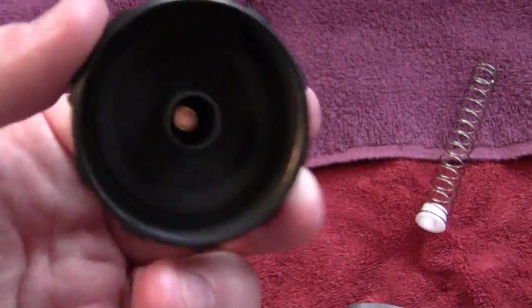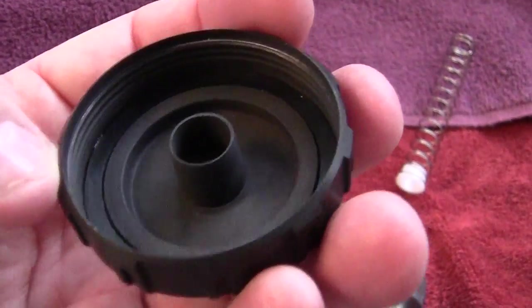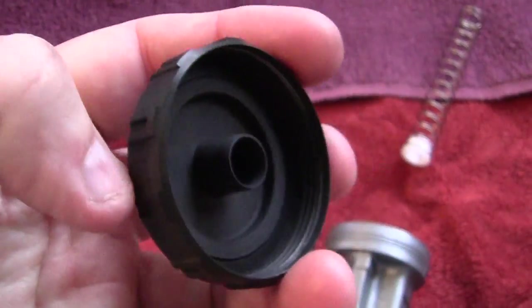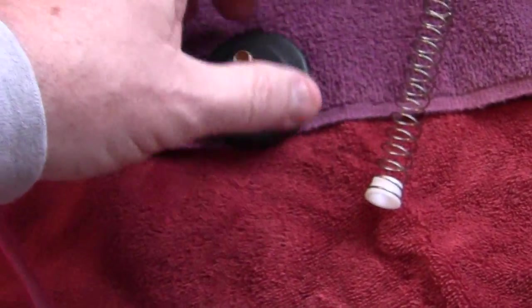The Keihin 33mm top is not plastic, it is aluminum, even though it looks plastic.